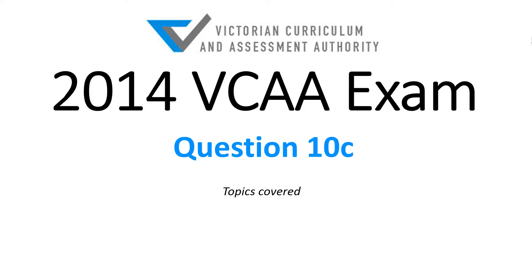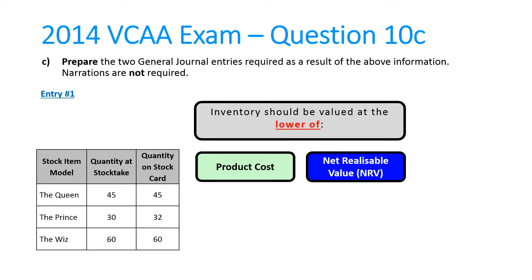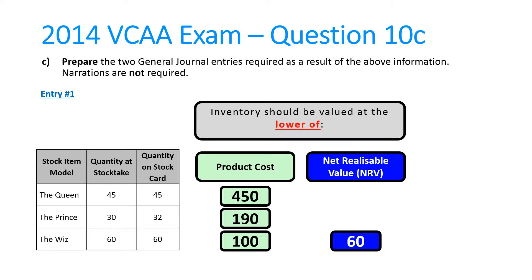Question 10c was related to 10a, and what it asked you to do was a journal entry to do with inventory valuation. In 10a, you had to figure out the product cost and the net realizable value of three types of coffee machines. For each one you figured out a cost and a net realizable value, and you valued the particular model at the lower of product cost and net realizable value. The Queen was valued at $450, the Prince at $190, but the Whiz actually needed to be written down to its net realizable value of $60.